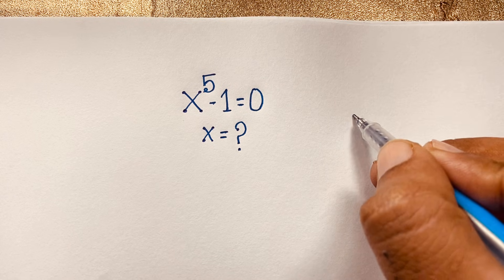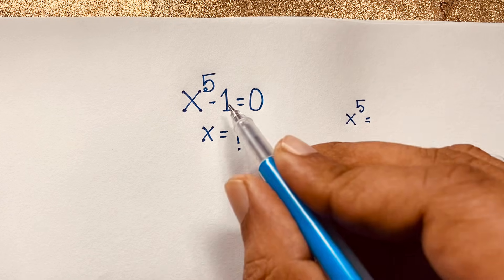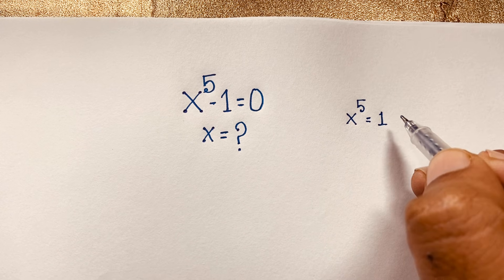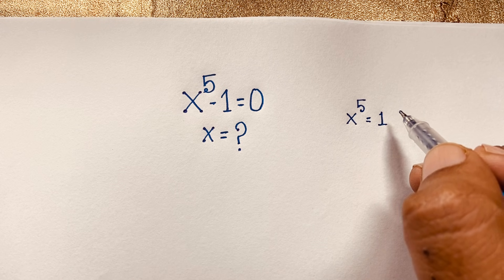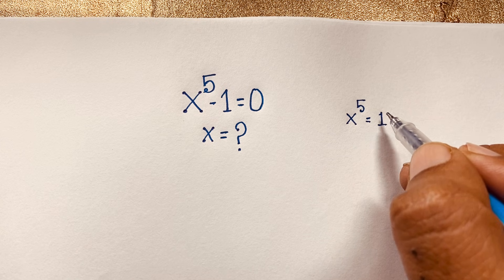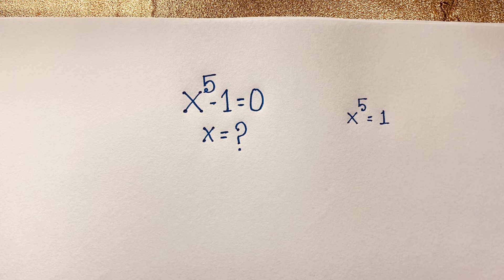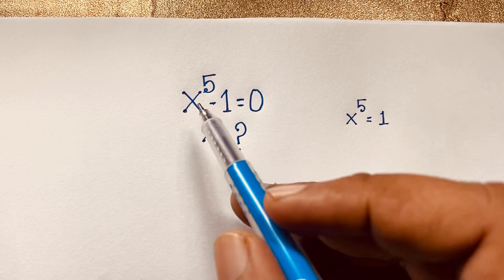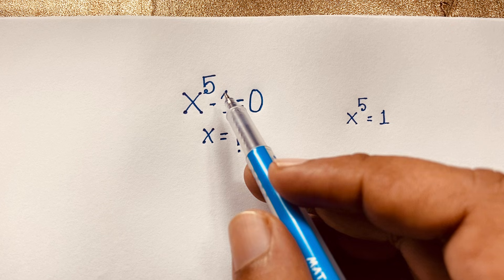You can say that this is x to the power 5, and if I move this 1 to the other side, it will be positive 1. Now at this moment you can say 1 to the power 5 is 1, so x is equal to 1. This is one right answer, but our target is to find all 5 solutions.